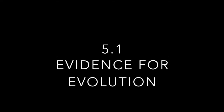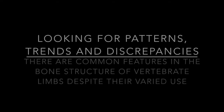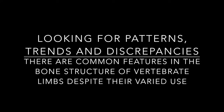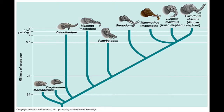Evolution, coming from the Latin word evolutio, meaning unrolling of a book. How appropriate that this biological process was named such. However, Charles Darwin preferred 'descent with modification,' which is basically what natural selection is.